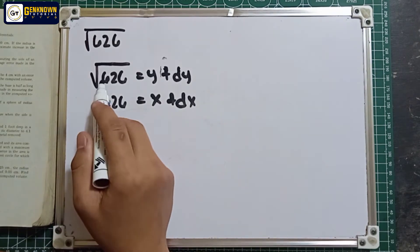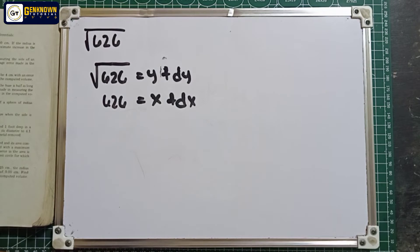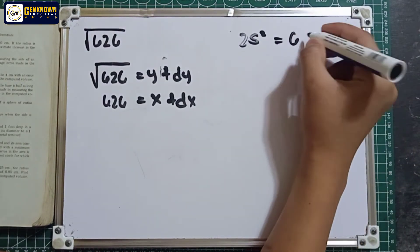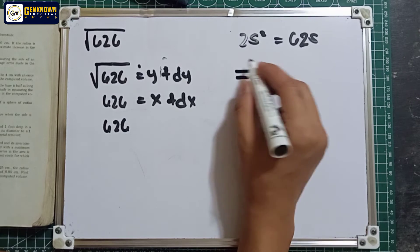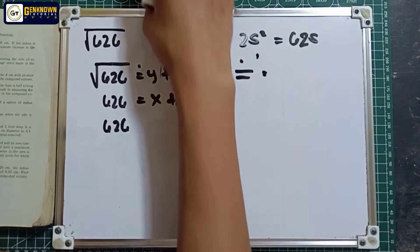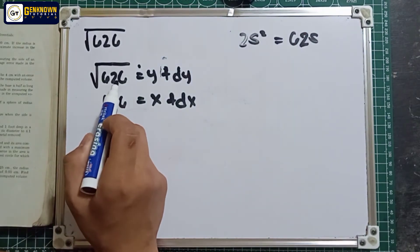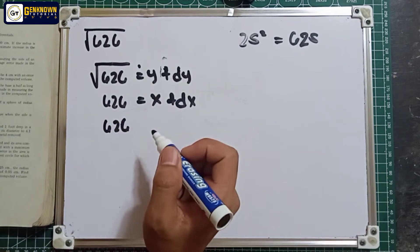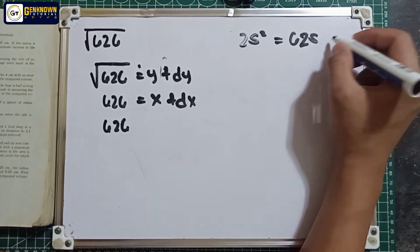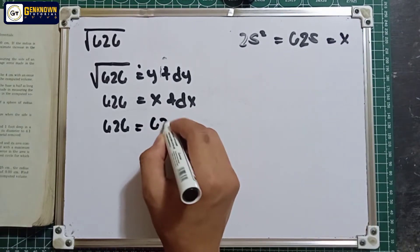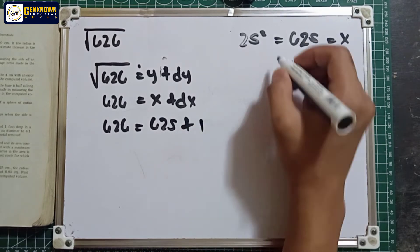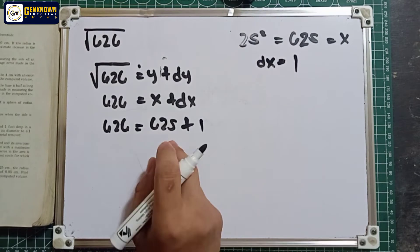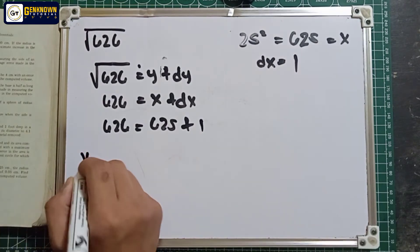The value of x here is any perfect number nearest to 626. Since 25 squared equals 625, we use x equals 625. To make 625 become 626, we add 1, so dx equals 1. Thus 626 equals 625 plus 1.